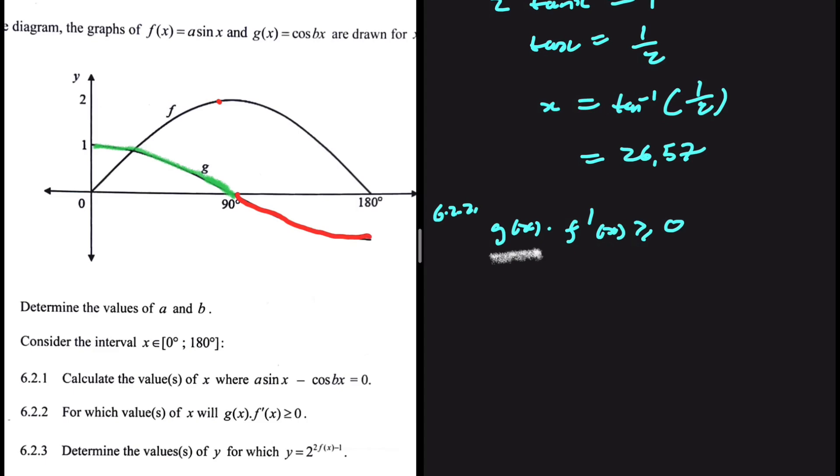Now let's get f prime of x. f prime of x, that is the gradient. When is the gradient of f of x positive and where is the gradient of f of x negative? The gradient of f of x is positive when the graph is sloping up. The gradient is just a slope. And it is negative when the graph is sloping down.